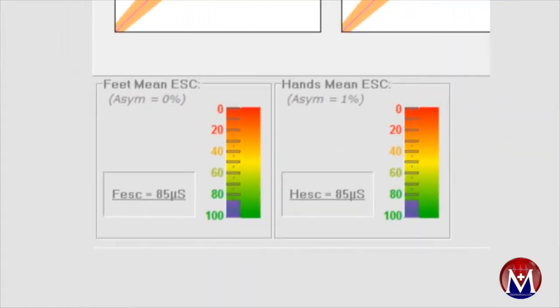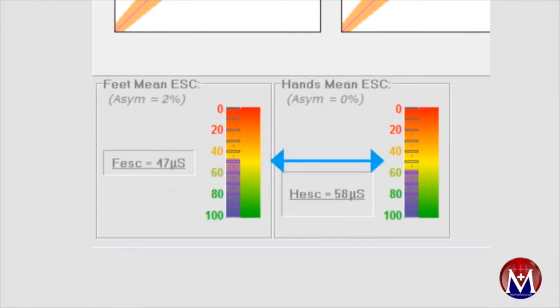A conductance of greater than or equal to 60 microsiemens indicates good sweat function. A conductance between 40 and 60 microsiemens indicates moderate sweat function and suggests possible early signs of peripheral autonomic neuropathy.